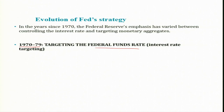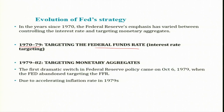It does not mean that monetary aggregates were neglected in the 1970s — although on a month-to-month basis interest rate targeting was given precedence. The first dramatic switch in Federal Reserve Policy came on October 6, 1979, when the Fed abandoned targeting the Fed funds rate by switching to targeting monetary aggregates.